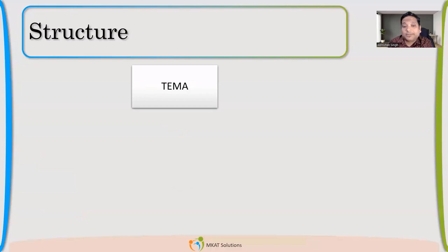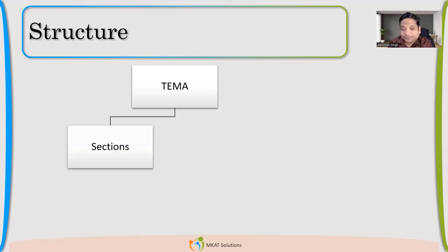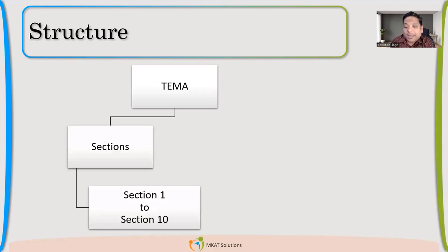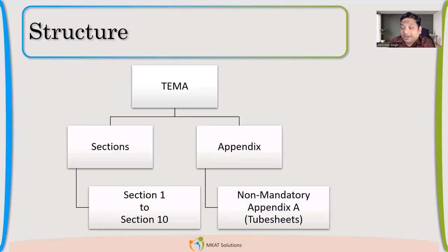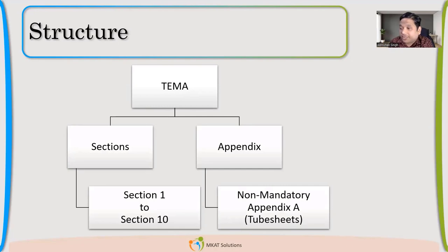Let us talk about the structure of TEMA. TEMA has 10 sections and there is one appendix, which is a non-mandatory appendix. Earlier it used to be a mandatory appendix for tube sheet design, but now it's non-mandatory because UHX has become a mandatory requirement. So 10 sections and one non-mandatory appendix — that is the structure. Now we'll see the different sections and their uses.